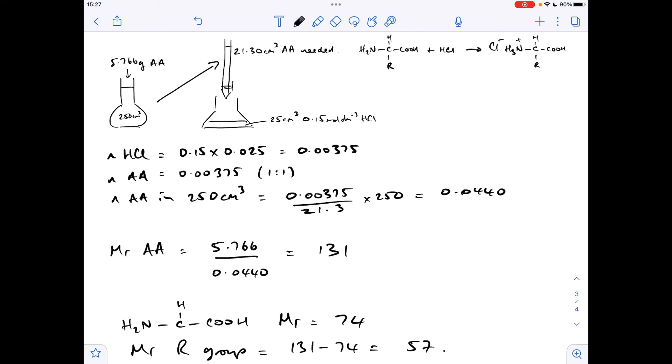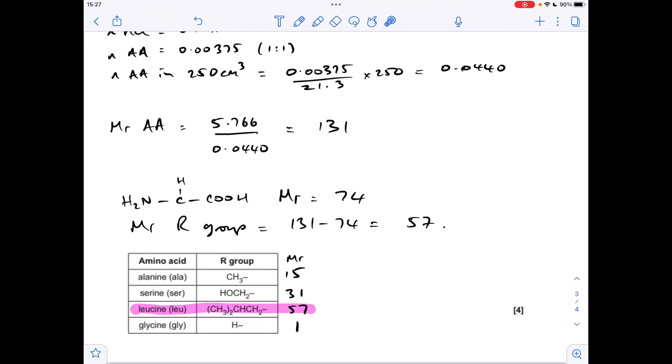So all we've got to do now is work out the MR of the different R groups supplied and see which one fits. You can see that we're getting 57 for the R group in leucine. So that's obviously the alpha amino acid.